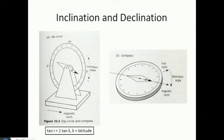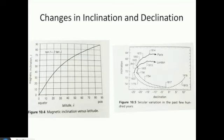Declination is the difference between magnetic North and true North. You can actually calculate the inclination using the formula: tan(I) = 2·tan(λ), where λ is the latitude. So the inclination is dependent on your latitude on the Earth, because it's then dependent on those field lines coming into the Earth.